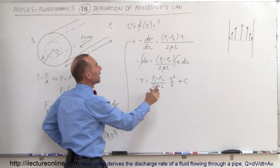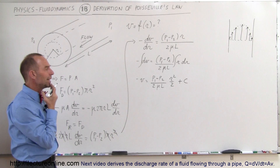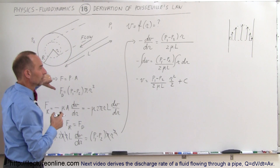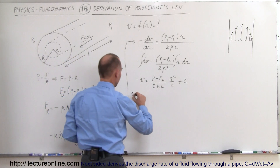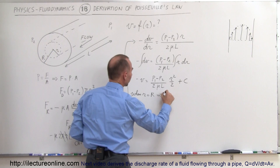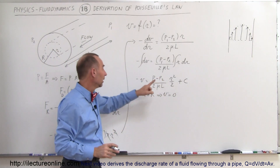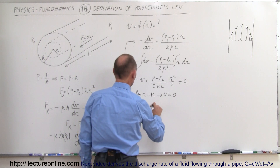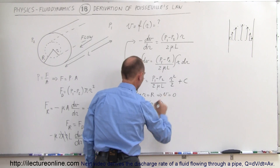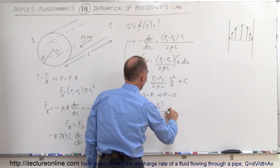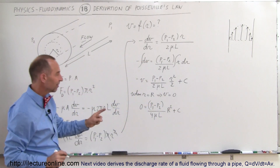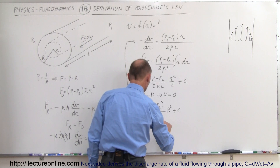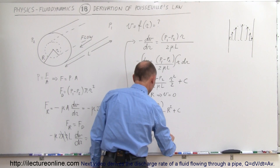Now we evaluate the constant C using the boundary condition: when r equals big R — the radius of the pipe — the velocity equals zero. Plugging in big R for r and zero for v, we get: 0 equals (P1 minus P2) divided by 4μL times R squared plus C. Solving for C gives: C equals negative (P1 minus P2) divided by 4μL times R squared.